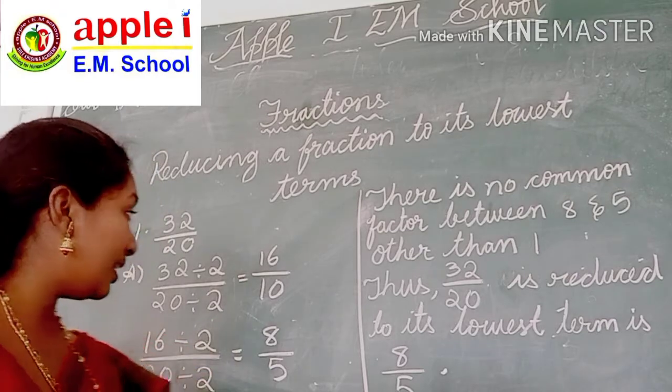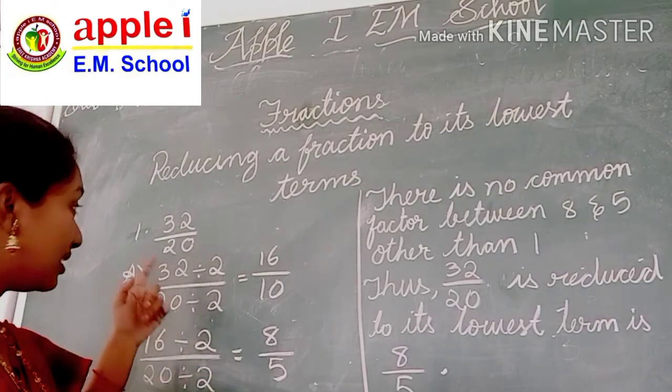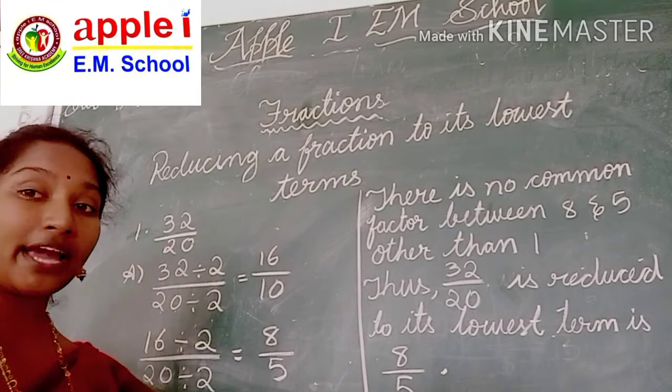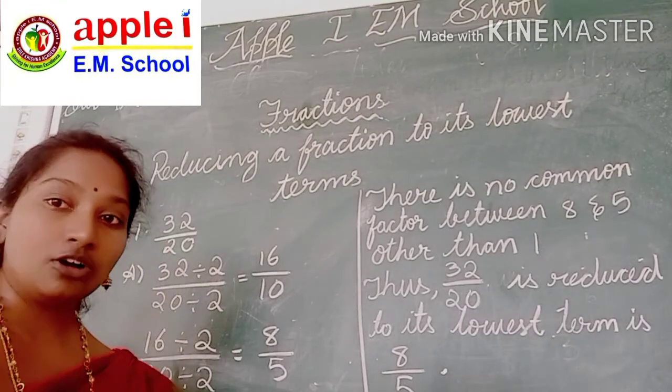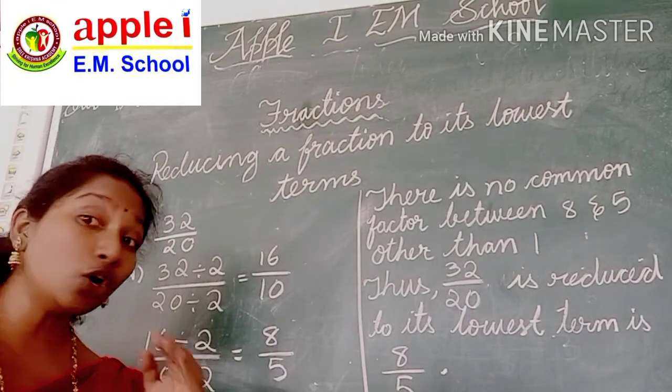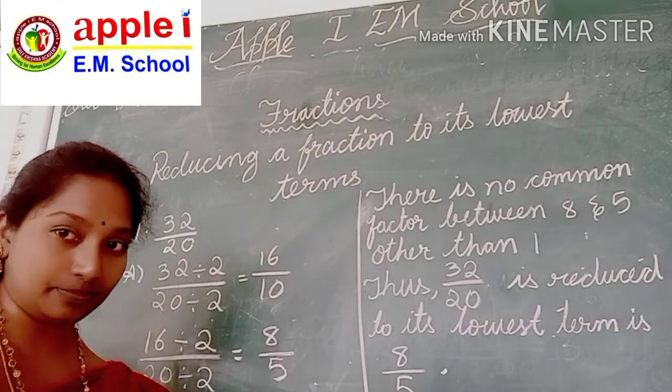Here I am giving one example: 32 by 20. We have to reduce this fraction to its lowest term.